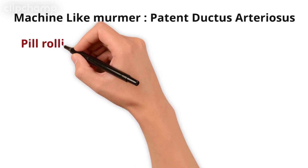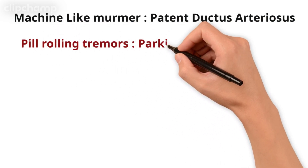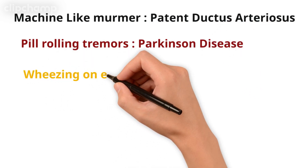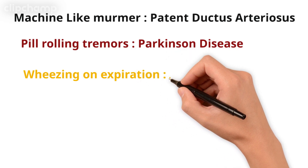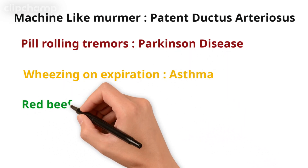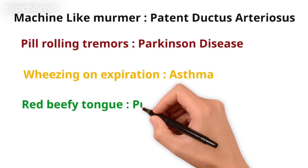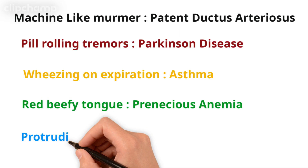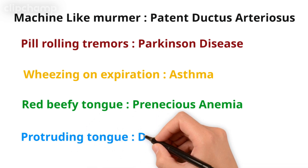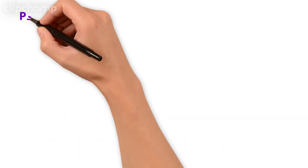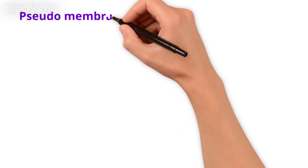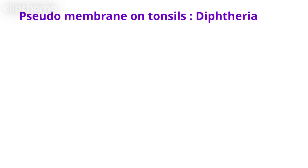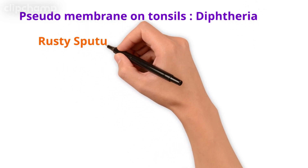Pill-rolling tremors in the neurology ward indicate Parkinson's disease. Wheezing on expiration in the pulmonology ward is asthma. Red beefy tongue is pernicious anemia. Protruding tongue is Down syndrome. Next, pseudomembrane on tonsils is the sign of diphtheria.